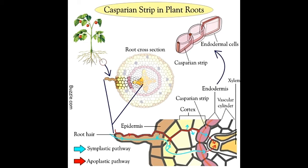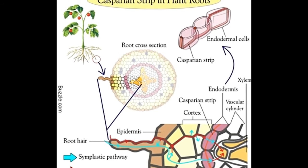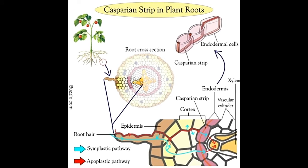Plant roots are complex structures made up of different types of layers and cells. Going inwards from the root surface, the various layers in order are: the outer epidermis made up of a single layer of cells, the middle cortex made of several layers, a single layer called the endodermis, and finally the vascular cylinder. The location of the Kasparian strip is only in the endodermis.